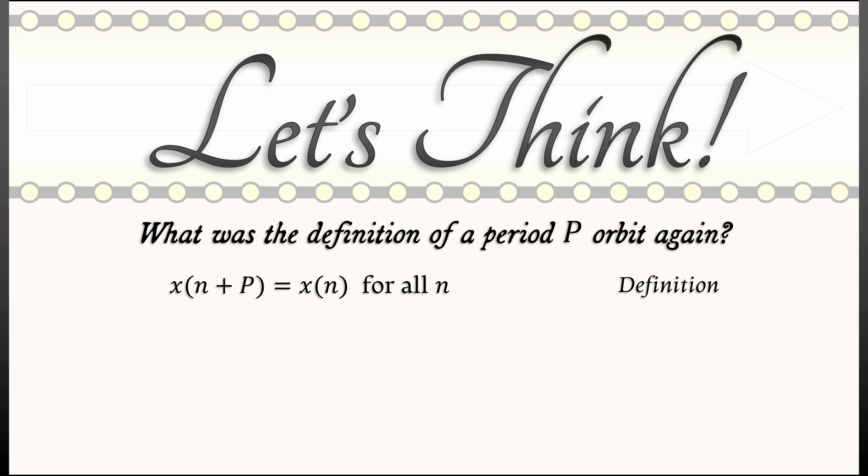But now, let's convert that using operator notation. If we think about the entire periodic orbit x, then what has to be satisfied is that x is really equal to E to the P x, where E is the shift operator and E to the P means you do it P times. That's really what that definition means.